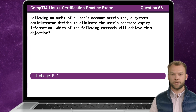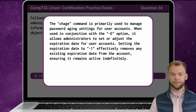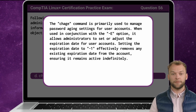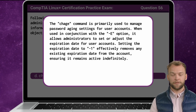The answer is D: chage -E -1. The chage command is primarily used to manage password aging settings for user accounts. When used with the -E option, it allows administrators to set or adjust the expiration date for user accounts. Setting the expiration date to -1 effectively removes any existing expiration date from the account, ensuring it remains active indefinitely.